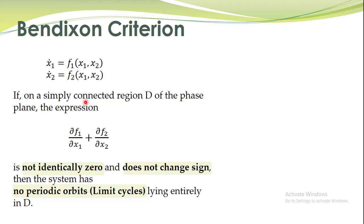Let's talk about the second theorem which can help us to predict the non-existence of a limit cycle. This theorem states that, again, we have a second-order nonlinear system, and if on a simply connected region D of the phase plane this expression is not identically zero and does not change sign, then the system has no periodic orbits — no limit cycle lying entirely in that particular region.